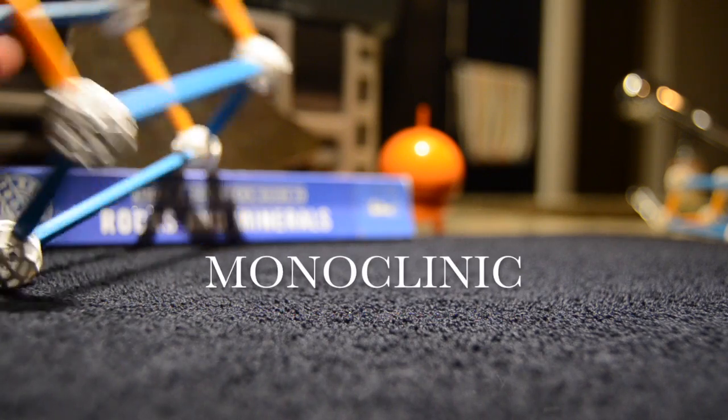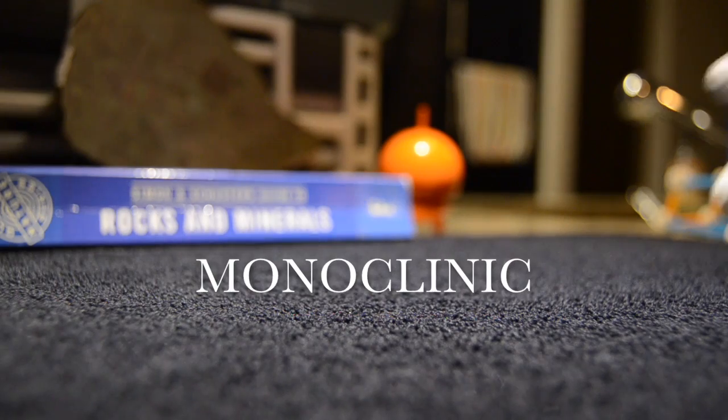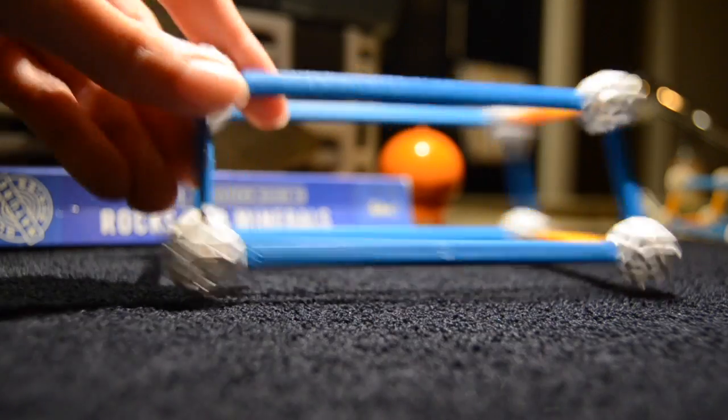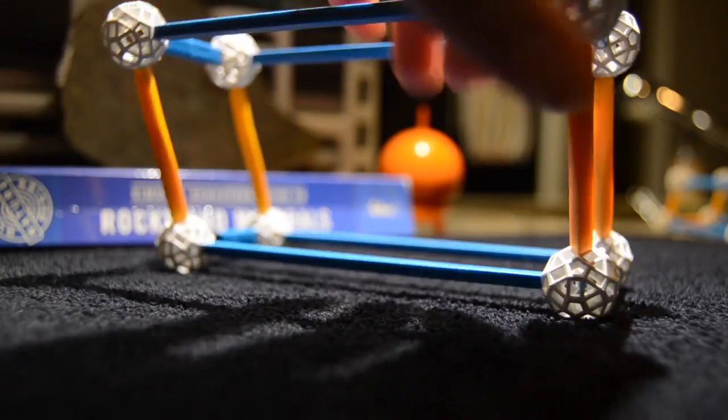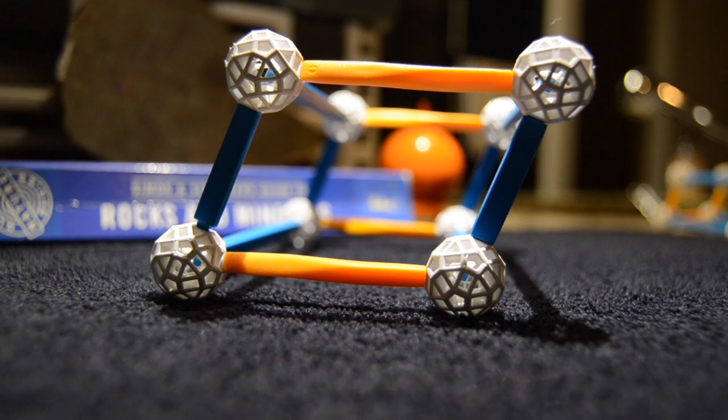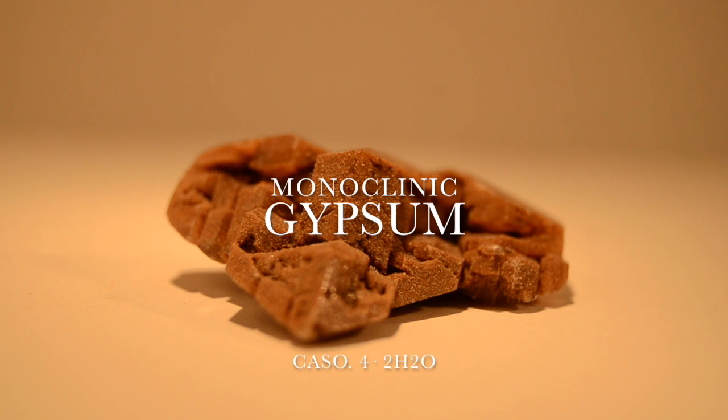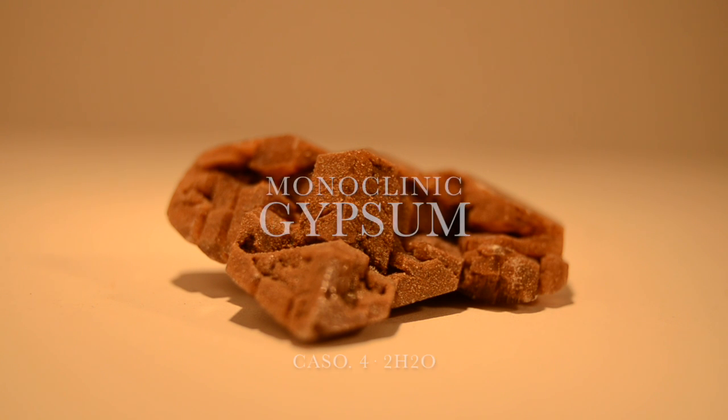The monoclinic system has no equal axes and two equal angles. Imagine a shoebox. In a monoclinic system, the shoebox will be slanted to one side. Gypsum is an example of a mineral that belongs to the monoclinic system.